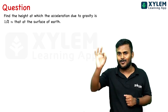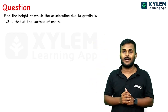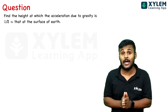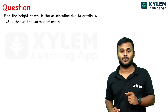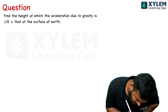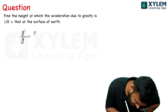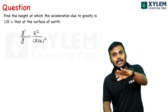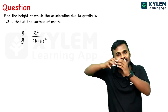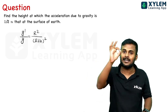The main equation is g' by g equal to R square divided by R plus H whole square. That is the major equation. We have these two equations to work with.